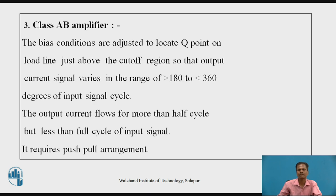Class AB amplifier: the power transistor bias conditions are adjusted to locate the Q point on the load line just above the cut-off region, so that the output current signal varies in the range of greater than 180 degrees to less than 360 degrees of the input signal cycle. The output current flows for more than half cycle but less than the full cycle of the input signal. It requires a push-pull arrangement to get output power for both cycles of the input signal.